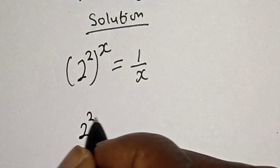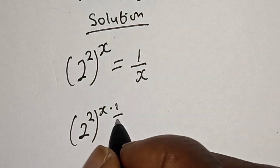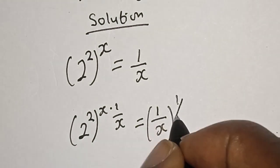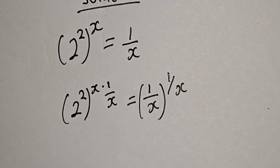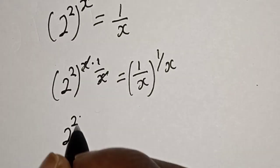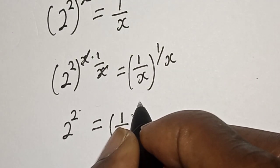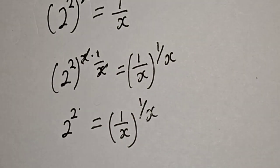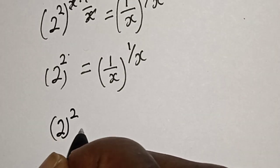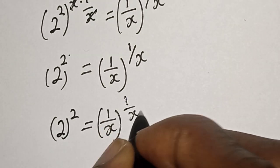2 raised to power 2, raised to power x, multiplied by 1 over x is equal to 1 over x multiplied by 1 over x. The powers cancel and we have 2 raised to power 2 is equal to 1 over x to the power of 1 over x. Then 2 to the power of 2 is equal to 1 over x raised to power of 1 over x.